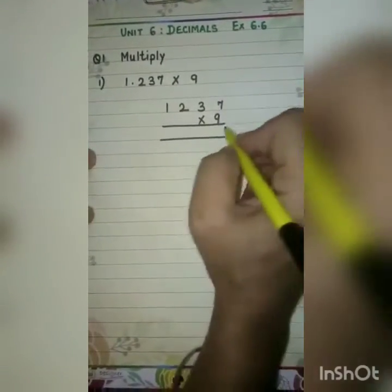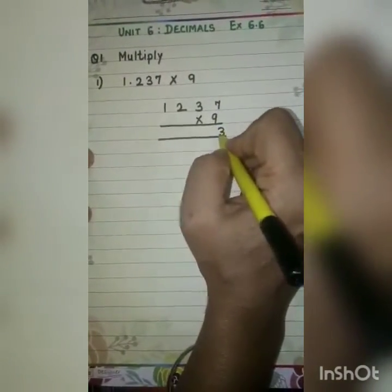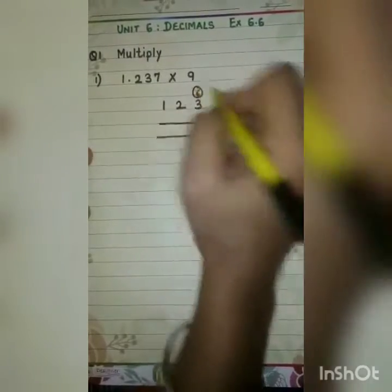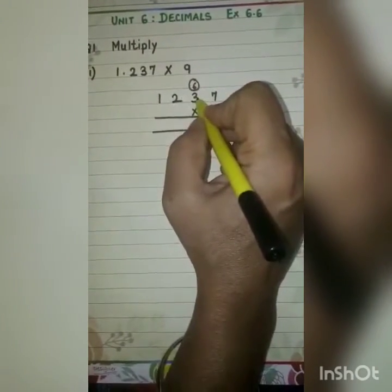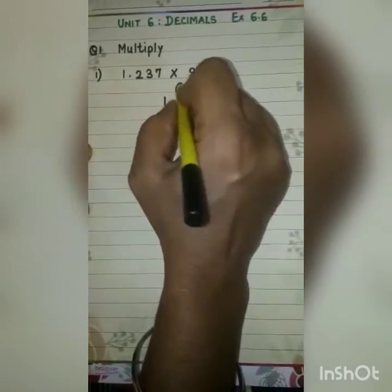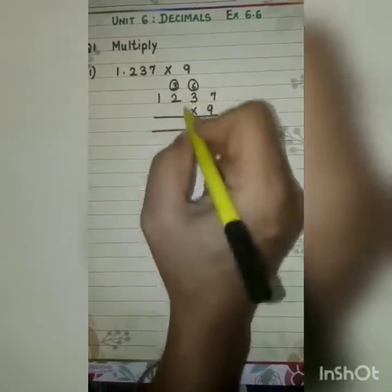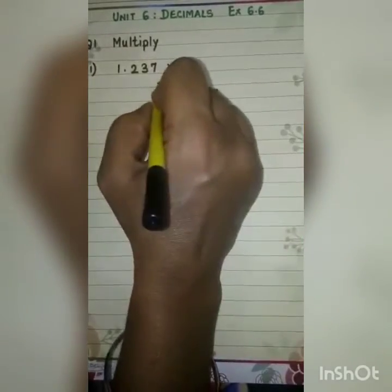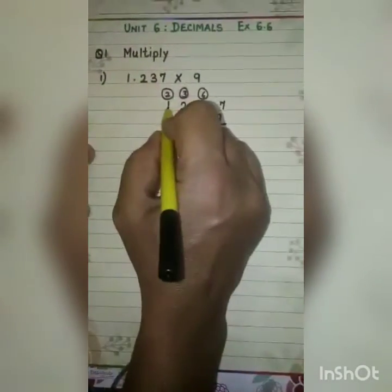So 9 multiplied by 7, 9 sevens are 63, carry 6. 9 threes are 27, 27 plus 6 is 33. 9 twos are 18, 18 plus 3 is 21, carry 2. 9 ones are 9, 9 plus 2 is 11.